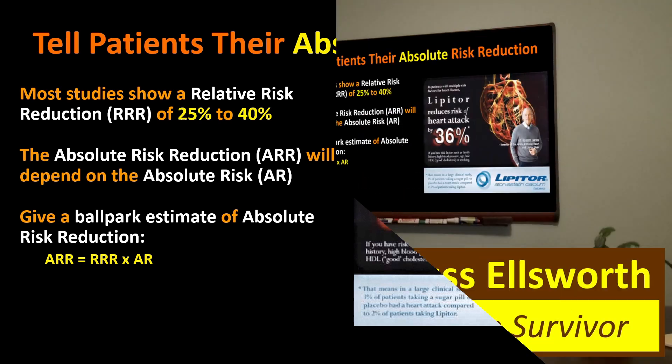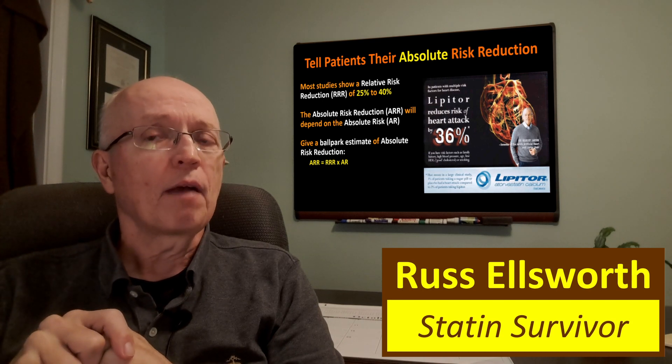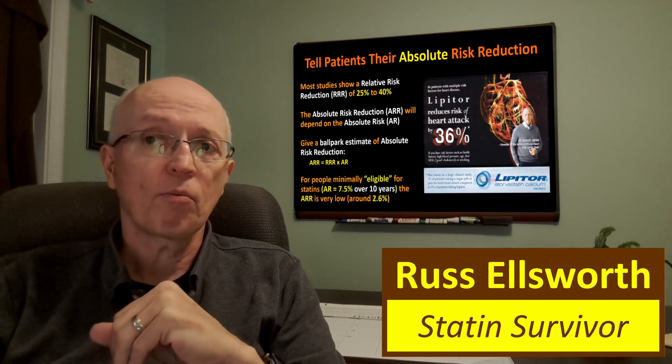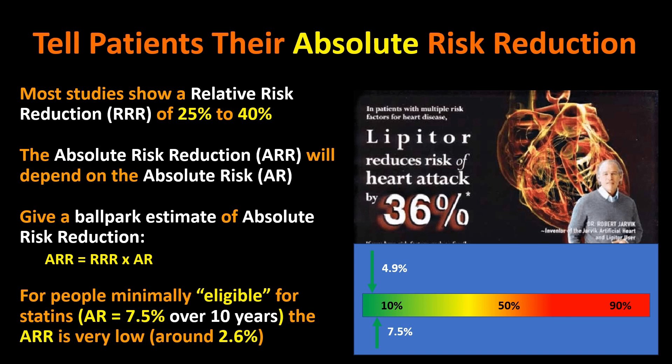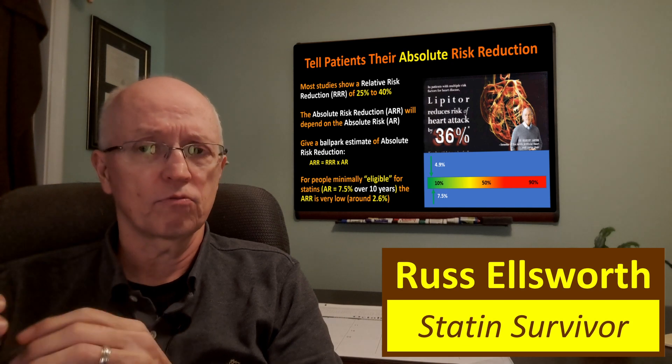We'll say 36% for Lipitor times your absolute risk. Now that is an extrapolation — it hasn't been shown that this relative risk reduction of 36% applies across all risk levels, but for most of us faced with a primary prevention decision it's probably pretty close. For example, if your risk of a heart attack in the next 10 years was 11%, your absolute risk reduction would be about 4%. For people minimally eligible for statins, with an absolute risk of about 7.5%, applying this 36% relative risk reduction still gives a very small number. In theory you would have to have a 100% chance of a heart attack in the next 10 years to get a 36% reduction. Both sides often misquote the absolute versus relative risk reduction distinction.